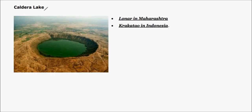Another volcanic landform is called caldera lake, where an inactive volcano's cone-like crater is filled with water. As this remains inactive for long years, due to rains, the crater gets filled with water and appears to be a lake. One example is Lonar in Maharashtra and Krakatoa in Indonesia.